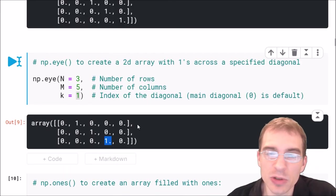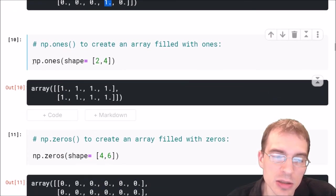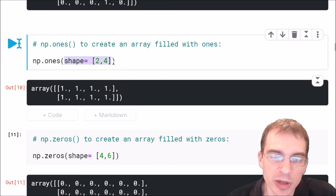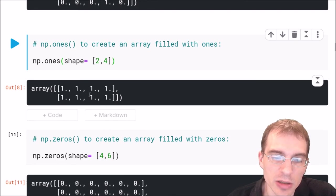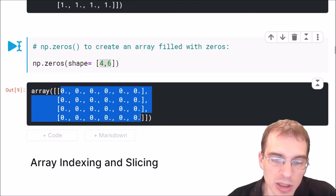If you want to create a matrix filled with ones you can use np.ones. We say np.ones then we pass in the shape of the array we want. In this case we're going to make a two by four matrix or array and it's filled with ones. You can do the same thing with zeros with np.zeros. Here we'll make another one but we'll make it four by six and it's filled with zeros.